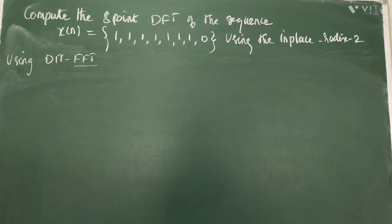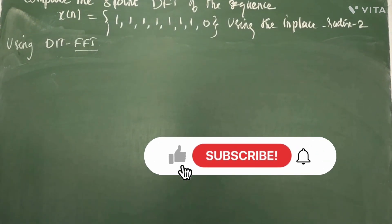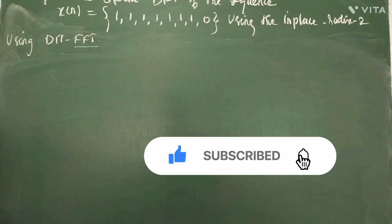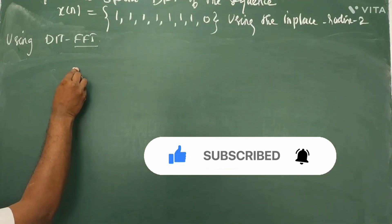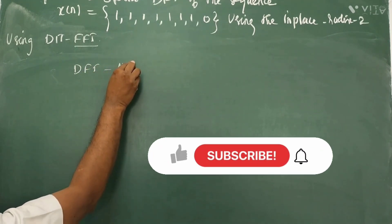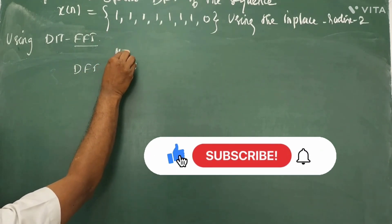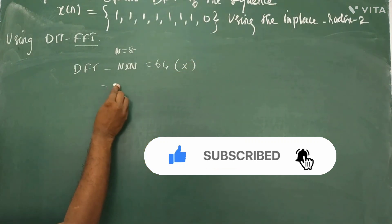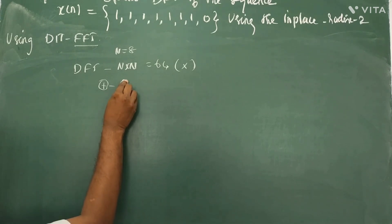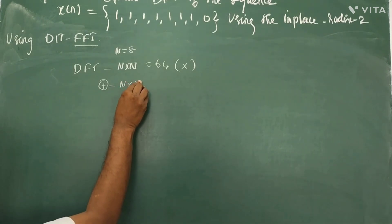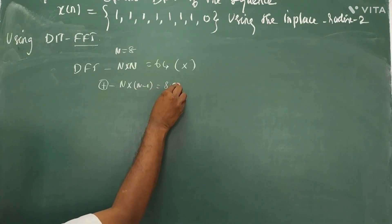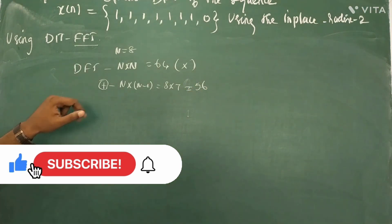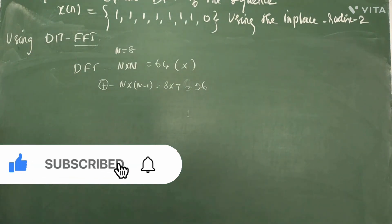Before starting the problem, you must know why we go for the Fast Fourier Transform. To compute the DFT for a given sequence, the total number of multiplications needed using the DFT is N×N. In our problem, the total number of samples is 8, so that is 64 multiplications. The number of additions required is N×(N-1) = 8×7 = 56. So we need 64 multiplications and 56 additions to compute this 8-point DFT.